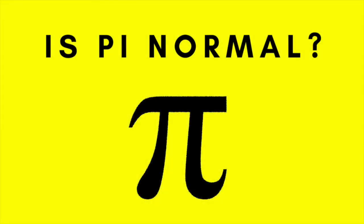Is pi normal? What does that even mean? A normal number is a real number in which all the digits in its infinite expansion occur with equal frequency.